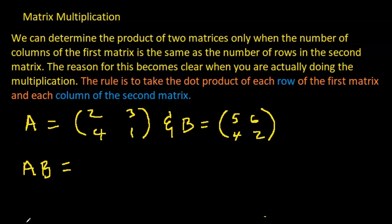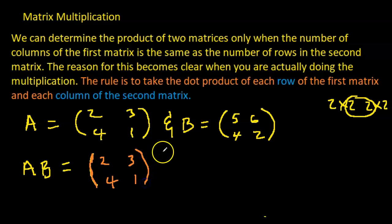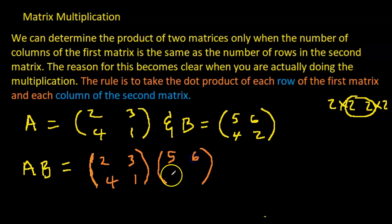Now let's do some actual multiplication. Matrix A is [2, 3; 4, 1] and matrix B is [5, 6; 4, 2], and we're asked to find A times B. Can we multiply them? A is 2×2 and B is 2×2 — the inner numbers are the same, so yes, we can. Let's perform the multiplication.